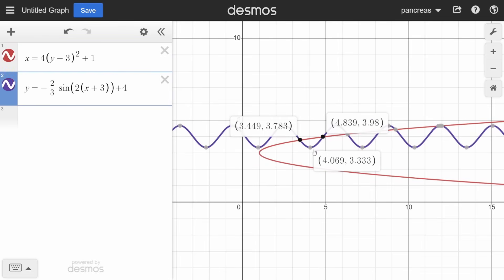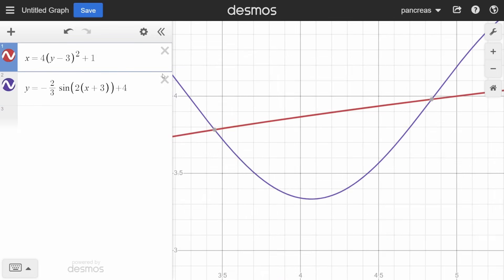Now that we only want an outline of this small area to show, to do this all we have to do is set the domain and ranges of both functions by looking at the intersections. One intersection is at 3.449 and 3.783, while the other is at 4.839 and 3.98.